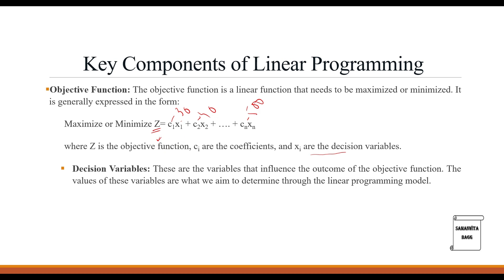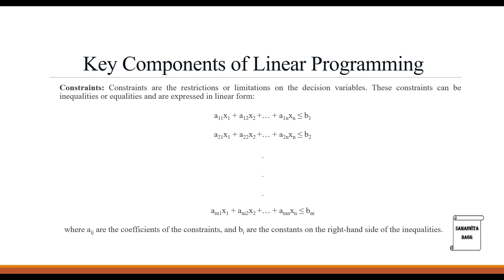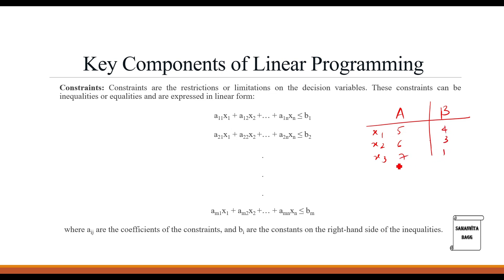Next are the constraints — restrictions or limitations on the decision variables. These constraints can be inequalities or equalities and are expressed in linear form. For example, if you are solving for products A and B with decision variables X1, X2, X3: for product A the coefficients might be 5, 6, 7 and for product B they might be 4, 3, 1, with maximum production values of 50 and 60 respectively.